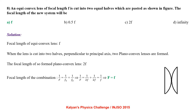An equiconvex lens of focal length F is cut into two equal halves which are pasted together as shown. When the lens is cut into two halves perpendicular to the principal axis, two plano-convex lenses are formed, each with focal length 2F. Applying the combination of lenses formula, 1 by F equals 1 by F1 plus 1 by F2, gives the effective focal length of the new system equal to F.